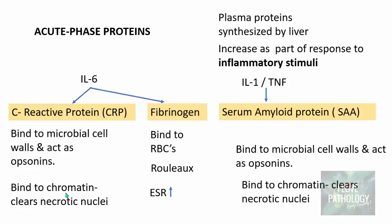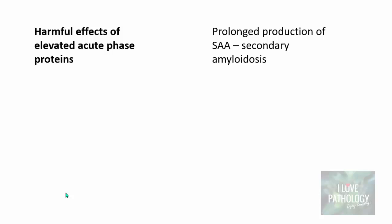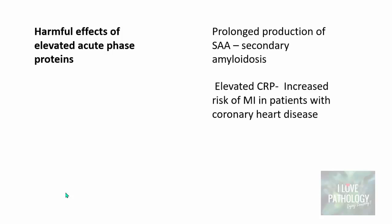We should also know the harmful effects of elevated acute phase proteins. If inflammation is prolonged, there will be prolonged production of serum amyloid protein, resulting in secondary amyloidosis. Additionally, patients with elevated CRP levels have an increased risk of myocardial infarction, particularly those with coronary artery disease.